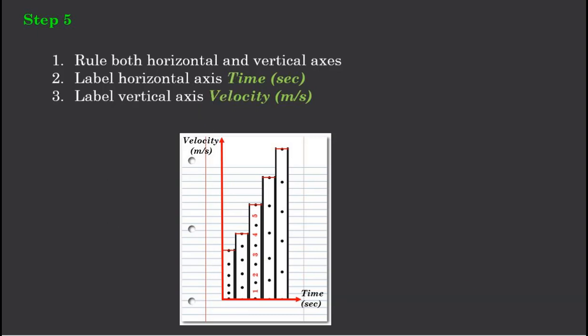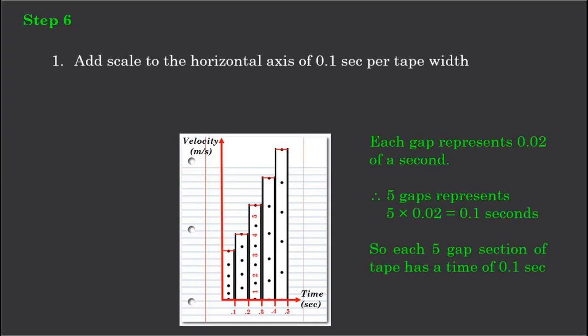We now need to look at the scale of the axis. We know that every one of these strips of paper represents 5 gaps, and each gap with a ticker timer represents 0.02 of a second, because it's 1/50th of a second.